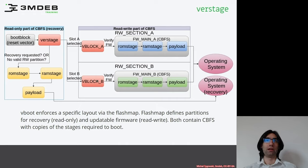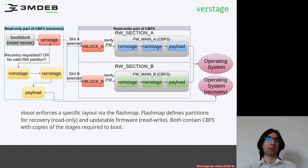However, if neither slot A nor slot B is good, then the first stage will hand over to the ramstage in the read-only part and mark that a recovery is needed. It will mark the recovery request and reboot the platform. After the reboot, the boot block is again launched from the read-only part, then goes to the first stage, and the VBoot logic in the first stage, when it detects the recovery flag, directly passes control to the ramstage in the read-only part.